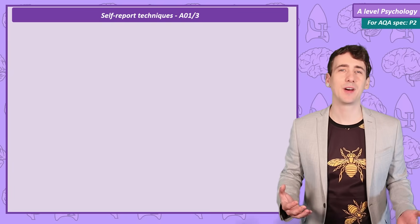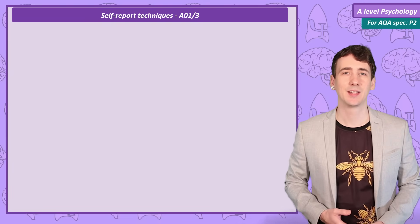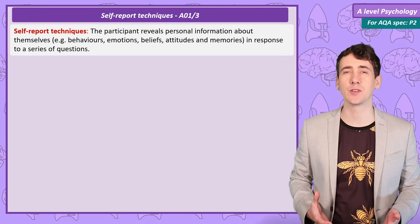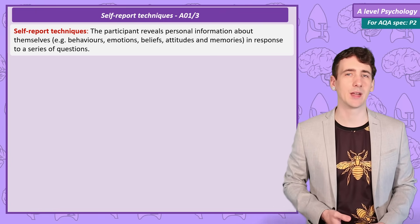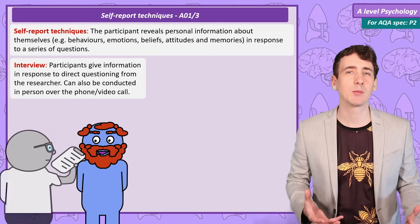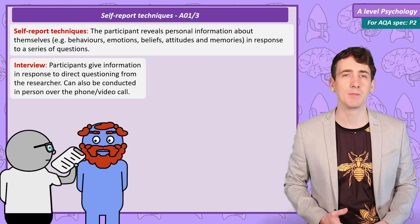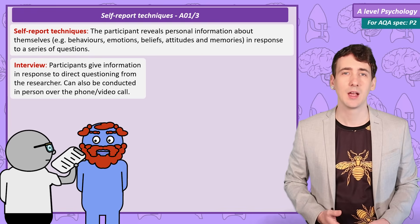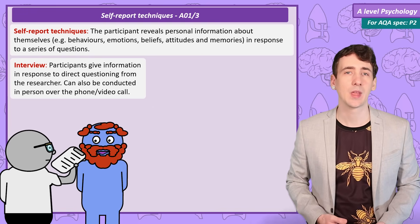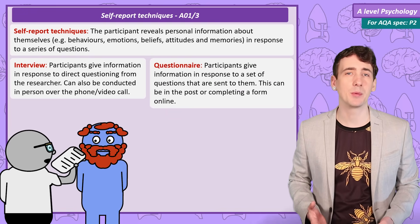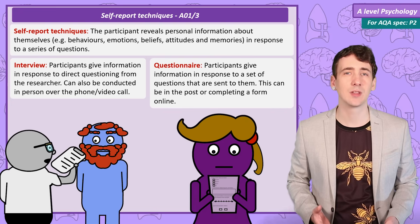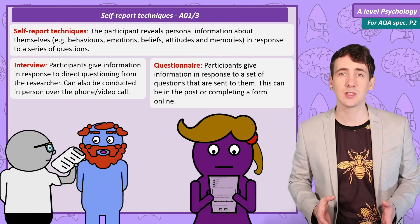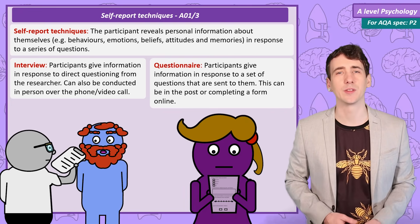Let's start by defining what a self-report technique is. This means a research technique in which the participant knowingly responds to questions revealing personal information about themselves. This could be a real-time conversation with a researcher directly, usually face-to-face but it could be over the phone or via text message — this is what we would call an interview. Another option is to have a list of pre-prepared questions that get sent out to the participants, who then fill them out and send them back — this is a questionnaire.